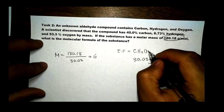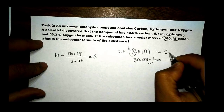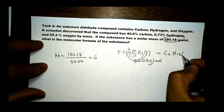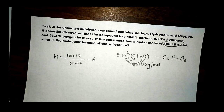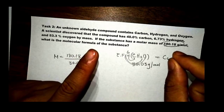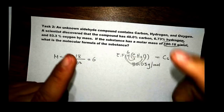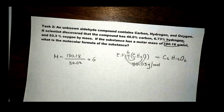We multiply the empirical formula subscripts by 6: that gives us 6 carbon, 12 hydrogen, and 6 oxygen — which is C₆H₁₂O₆. That's all we have to do to find the molecular formula of any compound. We need the empirical formula to find its molar mass, and we need the molar mass of the actual compound.